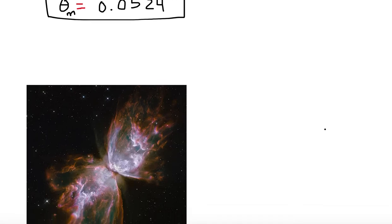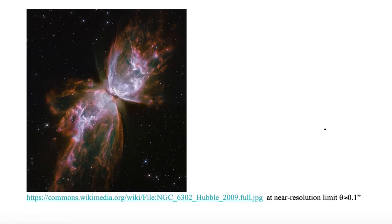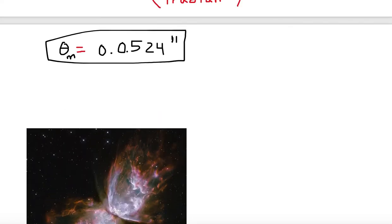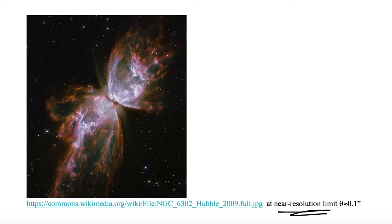Now the Hubble Space Telescope actually takes images at near resolution limit of 0.1 arc seconds, which is about double this value. Here we're looking at the butterfly nebula. It is a planetary nebula and it is showing you in the average wavelength band of 500 nanometers. Where you see pinks, they are really the color pink. Wherever you see oranges, they really are the color orange. We are looking at it in true color.